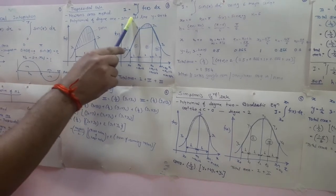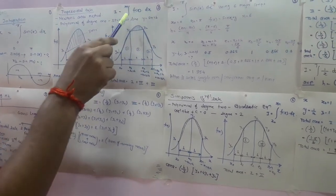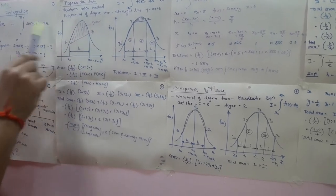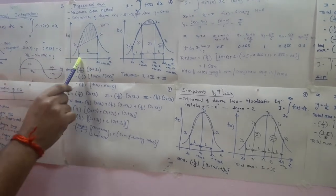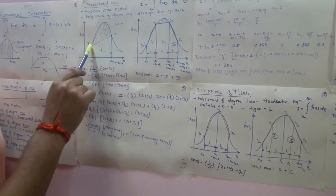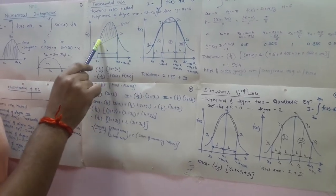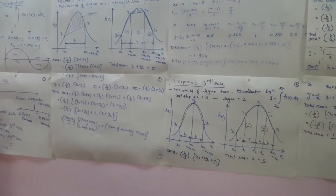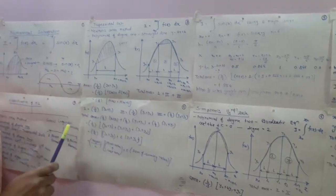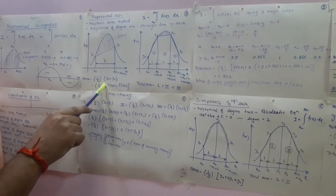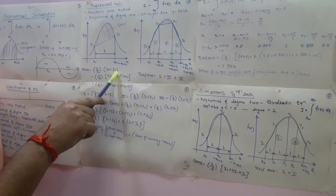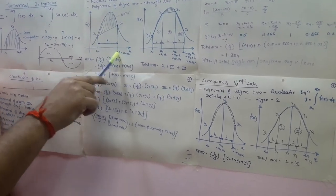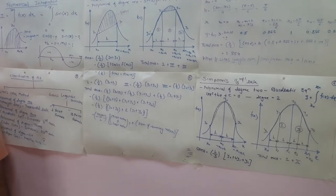Since the maximum index is 1, you only require 2 points to join the curve. Suppose I want to evaluate the integration of f(x) dx with limits from x₀ to xₙ. We plot the graph of x versus f(x) with limits from x₀ to xₙ, and these two points are joined with a straight line. The formula for a single strip is: Area = (h/2) × (y₀ + yₙ), that is, the sum of the two parallel sides of the trapezoid multiplied by height divided by 2.